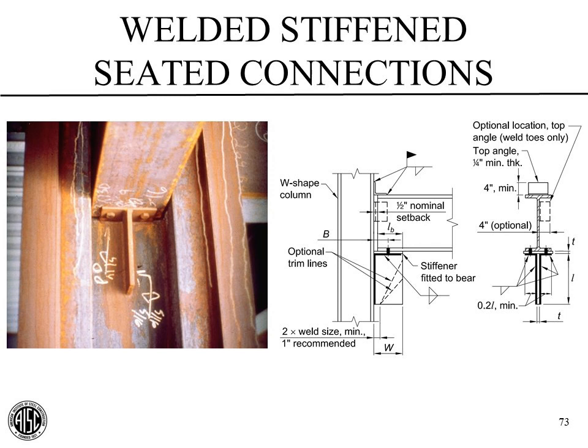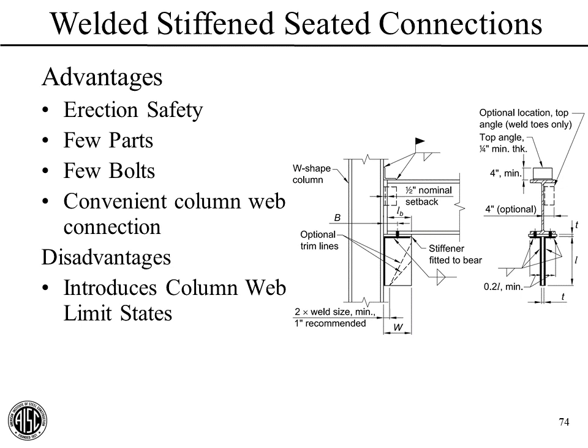Now let's move to welded stiffened seated connections. Here we have a massive W14 column and a beam bolting to this stiffened seated connection at the web, which has a seat plate and a seat stiffener welded to the column web. We'll limit ourselves to welded types for the sake of time. Advantages include erection safety—we bring the beam in and bolt it down without double-sided connection issues—and we have few parts.